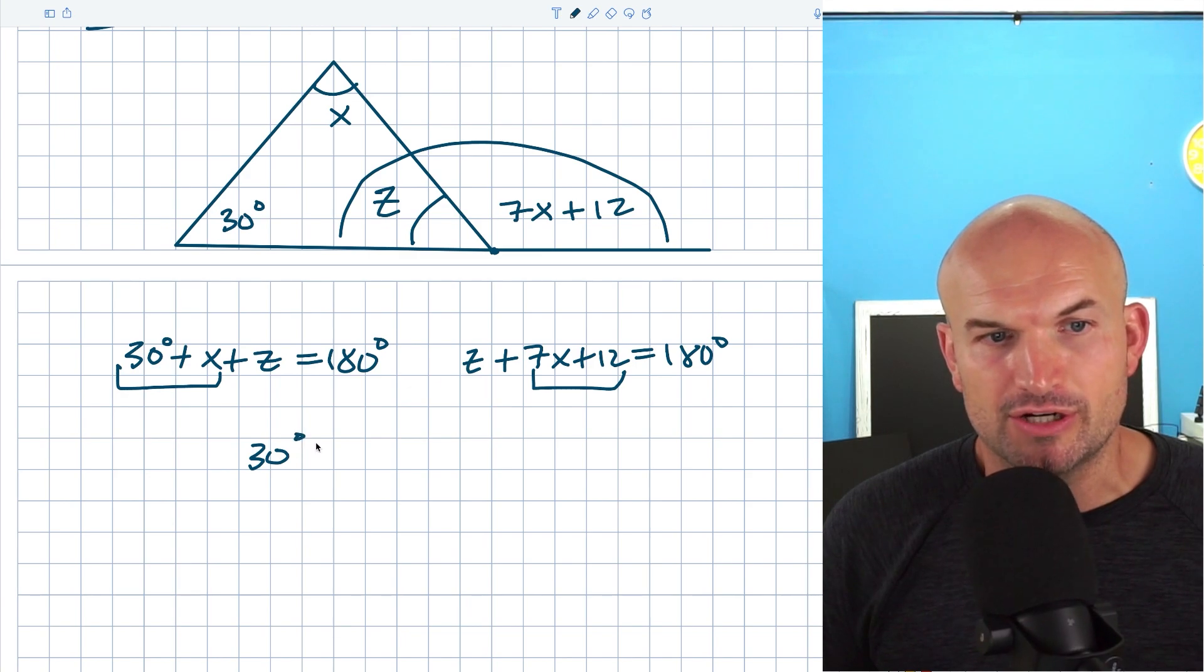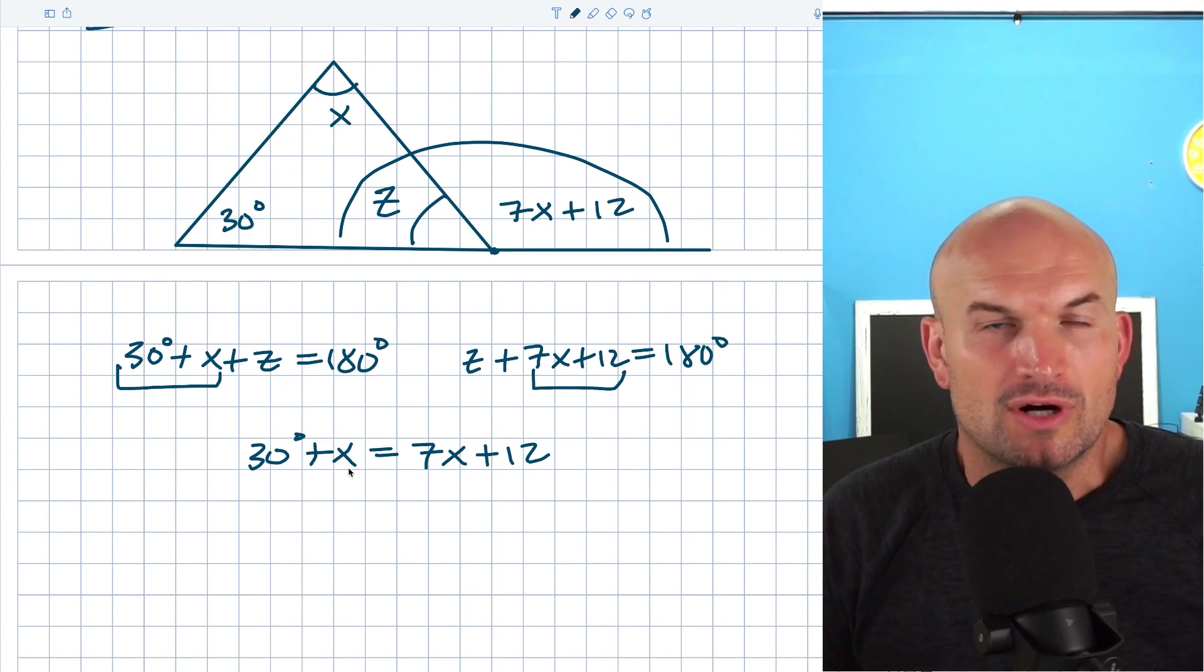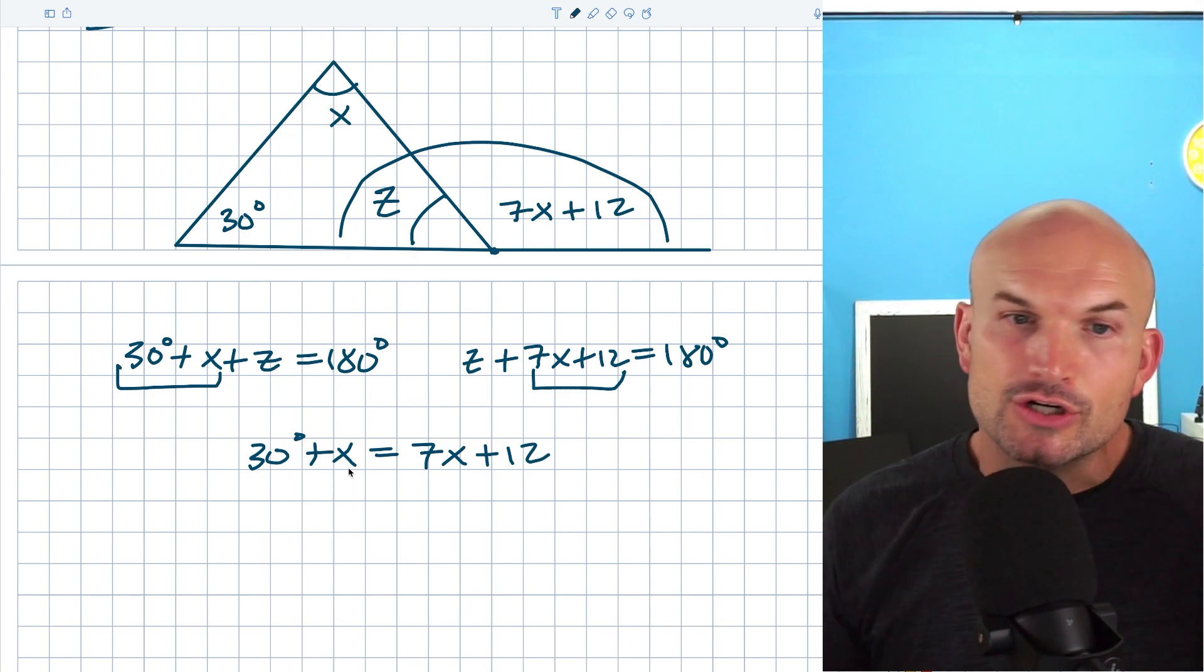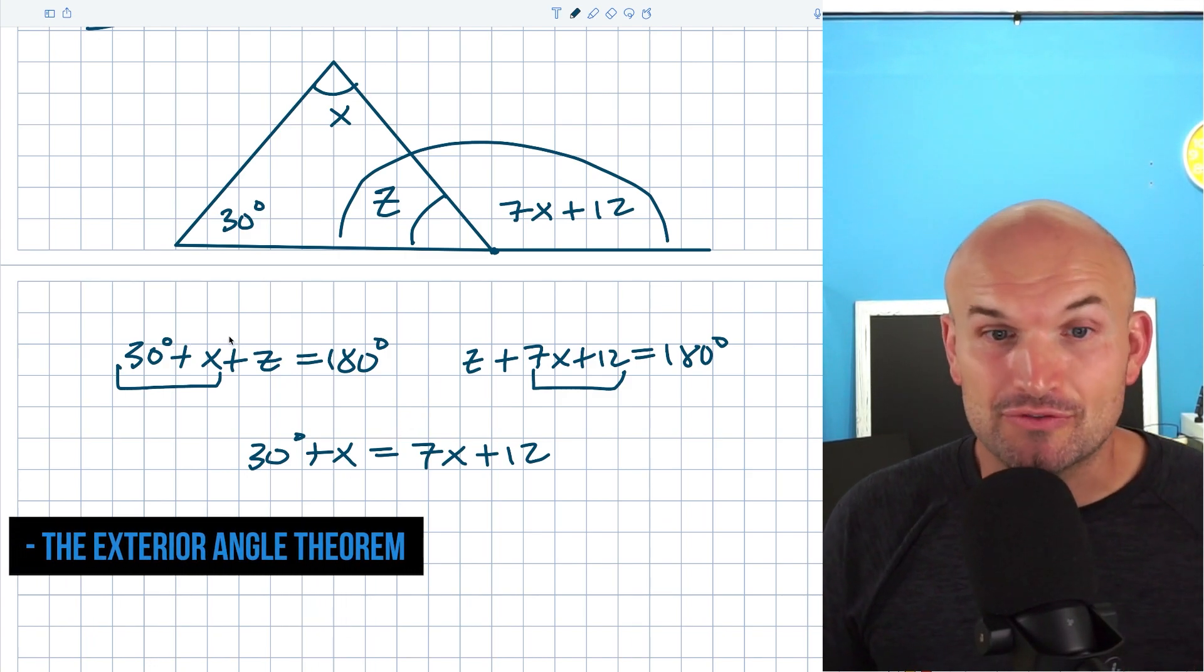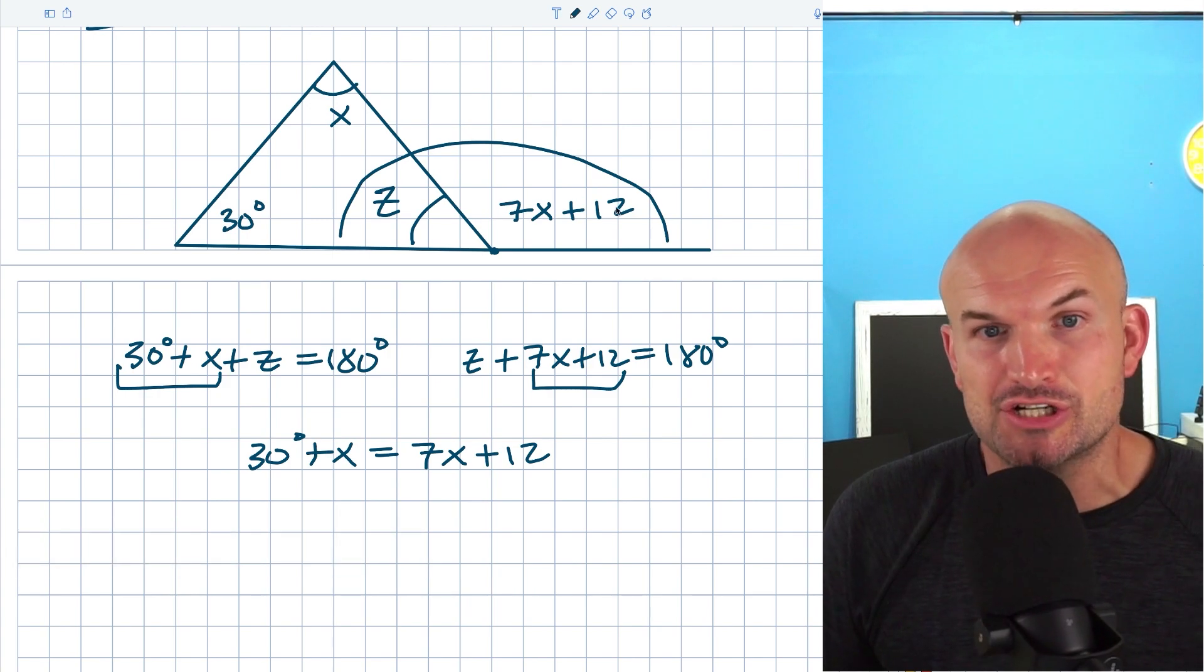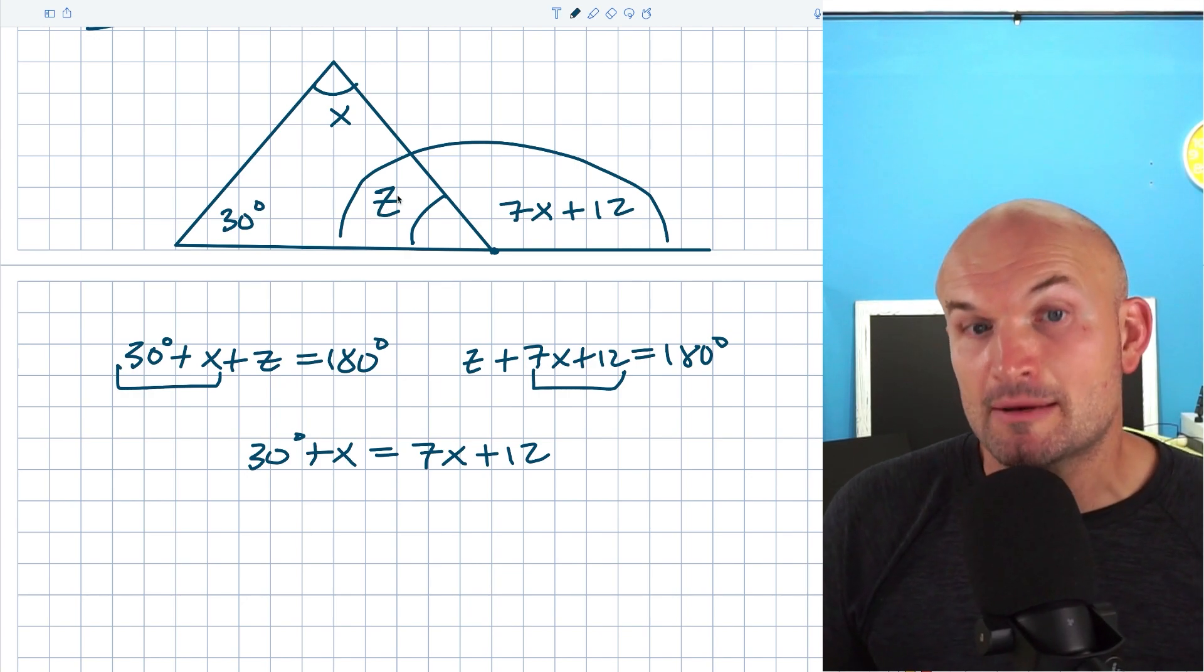Therefore I can just write the statement of 30 degrees plus X is equal to 7X plus 12. Our goal in this problem is to solve for X. I just created Z so I could understand the relationship between the angles. This is actually a relationship which we call the exterior angle theorem, which basically states that any exterior angle is equal to the sum of your two non-adjacent sides, because the adjacent side is going to be supplementary with.